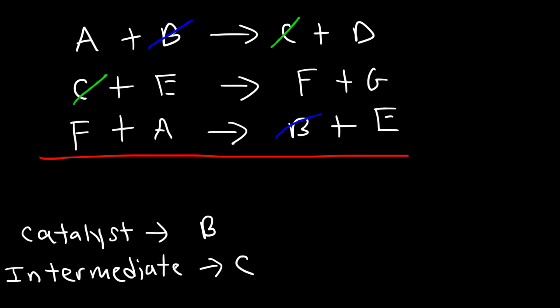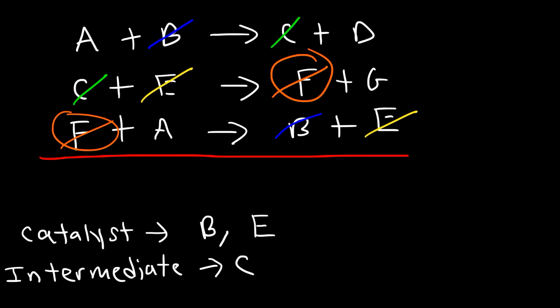Notice that E can also be canceled. E shows up on the left side first and then it shows up later on the right side, so E is consumed first and then produced later. This means that E is a catalyst, just like B is a catalyst. Next, we have F. F appears on the right side first and then shows up on the left side, so F is produced first and then consumed later — just like C. And so F is an intermediate.